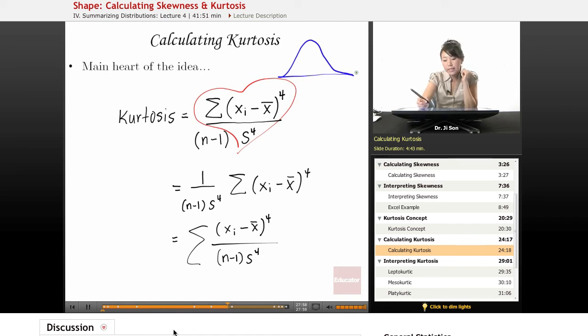The kurtosis, if you calculate it with some function like this, is going to be 3, right? And that's so arbitrary, right? It's just this weird number.